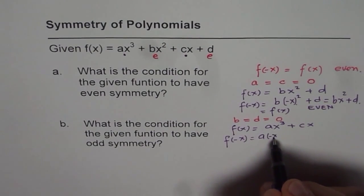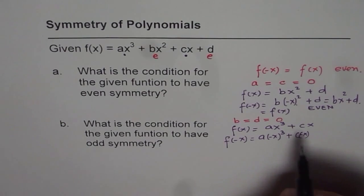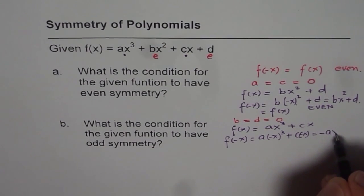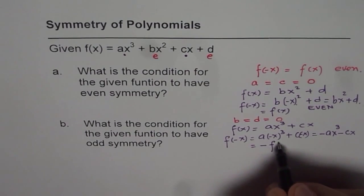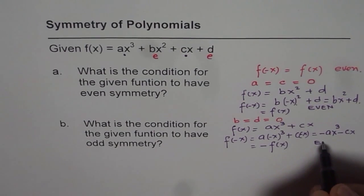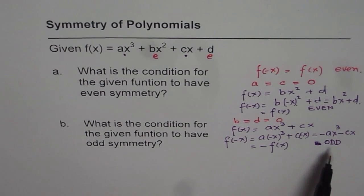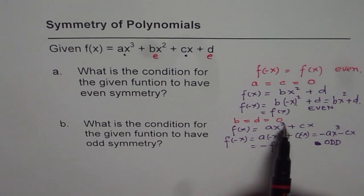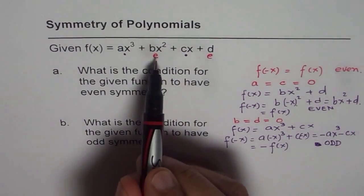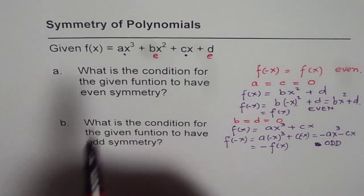What is f(−x)? It will be a(−x)³ + c(−x). Now (−x)³ makes it negative, so we get −ax³ − cx, which is −f(x). Since f(−x) = −f(x), we say that the function is odd — symmetric about the origin. So this function has odd symmetry if and only if b and d are equal to zero. Conversely, it has even symmetry if a and c are equal to zero.